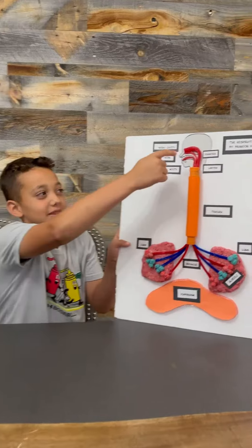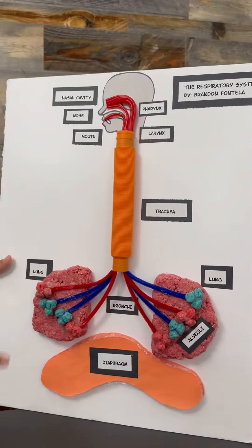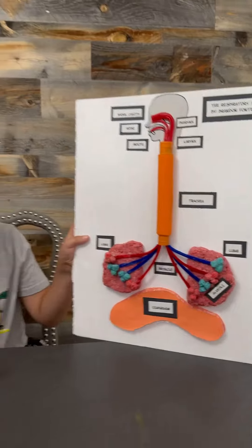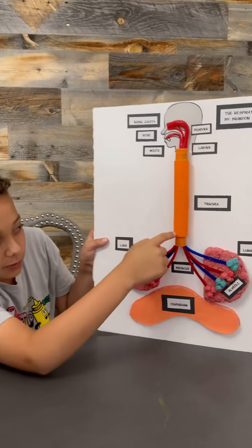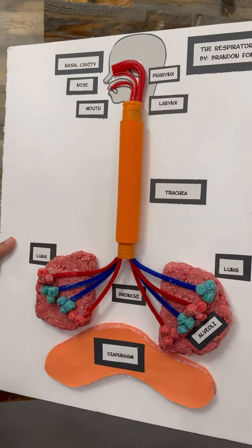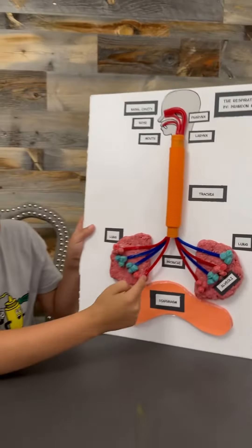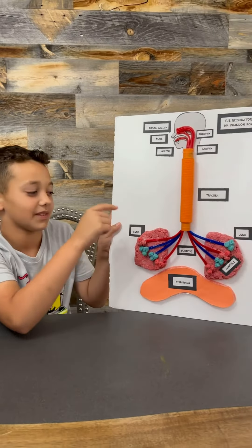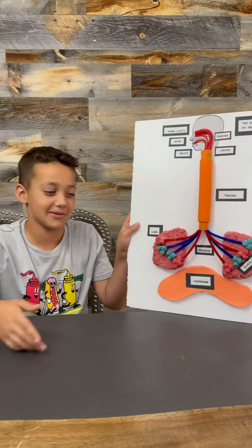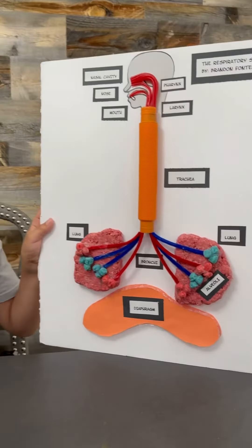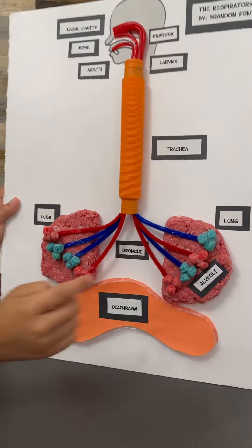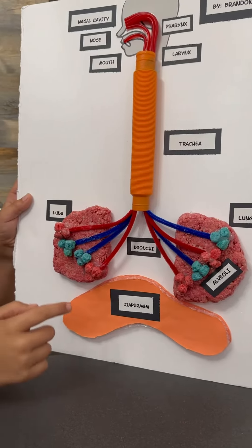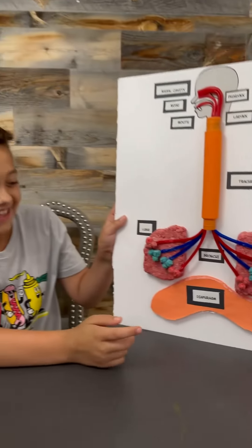First, I use these Twizzlers for the nose and mouth opening, the pharynx, and the larynx. Then I use the pop tube for the trachea, and then I use these cleaning pipes for the bronchi. Then strawberry flavored Rice Krispies for the lungs, and Captain Crunch berry flavors for the alveoli.